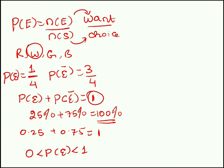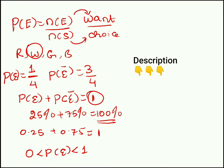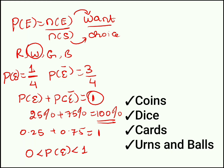Basic understanding of permutation and combination is mandatory for solving problems in probability, because indirectly you use concepts of combination as well as arrangements. I have included the link of permutation and combination in the description, so please do have a look at it. You can expect 4 varieties of problems in probability: first, problems based on coins; second, dice; third, cards; and finally, problems based on urns and balls.